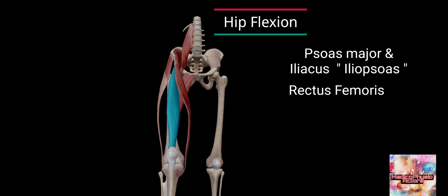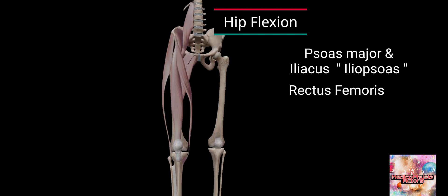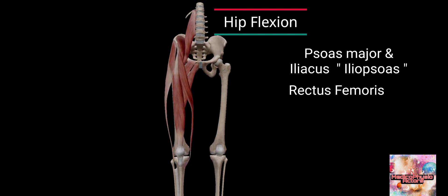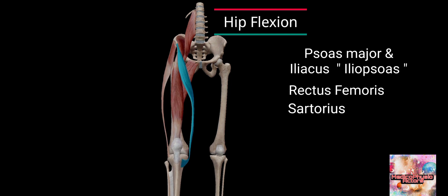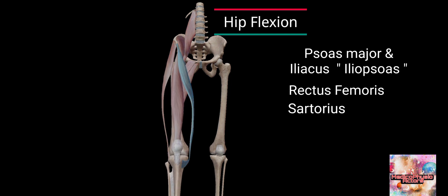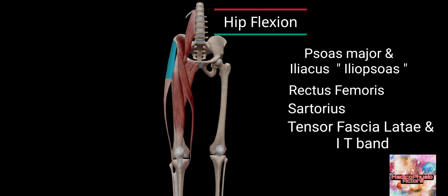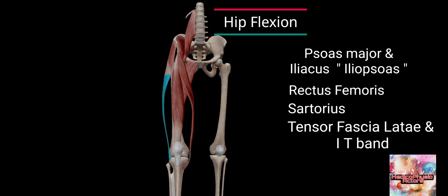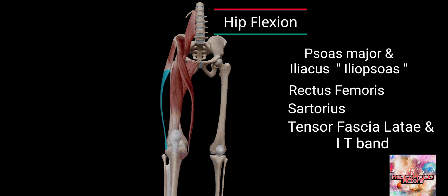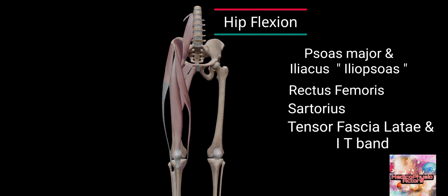Additional hip flexor muscles include rectus femoris of the quadriceps, sartorius, tensor fasciae latae and IT band, and adductors.